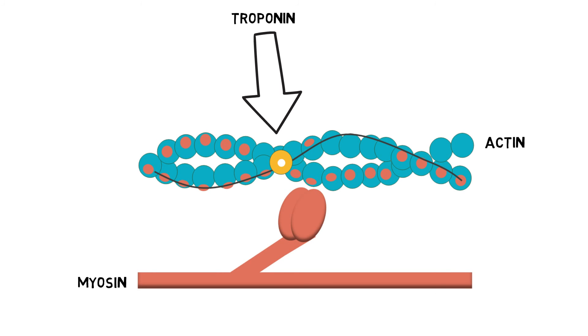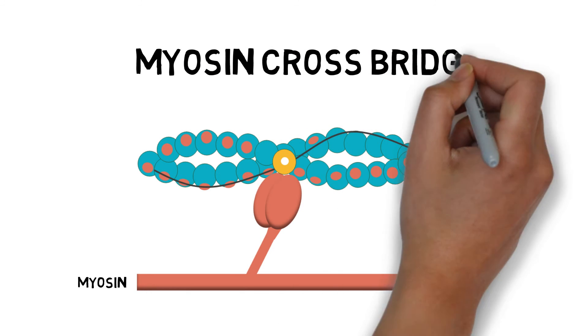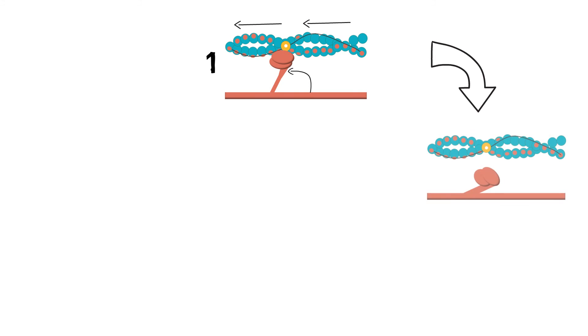Once the myosin is able to attach to the actin, a contraction can take place via the crossbridge cycle. The energized myosin heads pivot and bend, pulling the actin filament towards the centre of the sarcomere. This is called the power stroke. ATP then attaches to the myosin head, weakening the link and detaching it from the actin. Once the ATP is hydrolyzed, the myosin returns to the high-energized cocked position, ready to attach again.